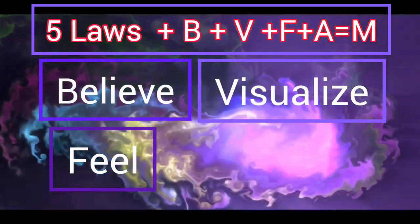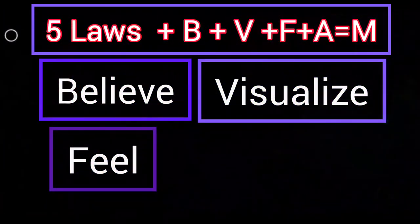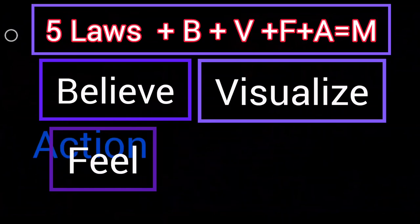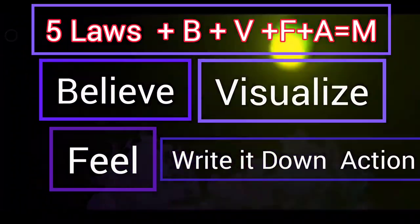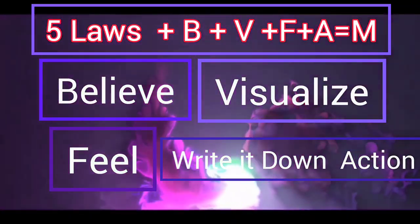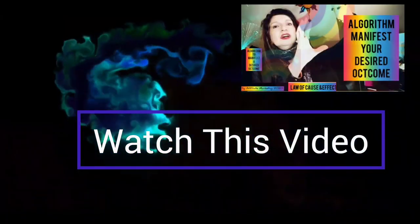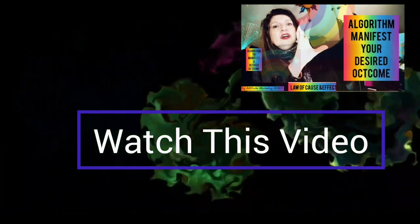This is last part of the algorithm: action. Write down your desired outcome, wish fulfillment, goals, or desires and put them where you can always see them. Do it now. Write down your desired outcome. Look to the top right of this video. I created this video recording on the algorithm of manifesting a desired outcome as a visual just for you.